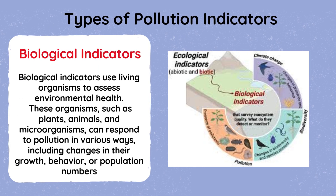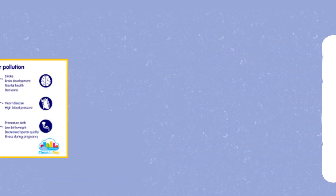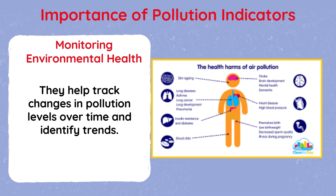Biological indicators use living organisms to assess environmental health. These organisms, such as plants, animals, and microorganisms, can respond to pollution in various ways, including changes in their growth, behavior, or population numbers. By monitoring these changes, scientists can identify areas with pollution problems and assess the overall health of ecosystems.